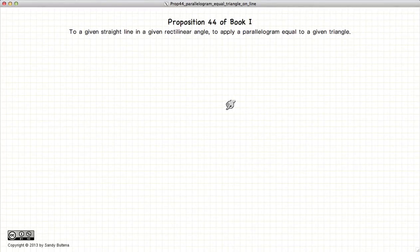which gives us the instructions on how to draw a parallelogram with the following conditions. We have a triangle, we have an angle, and we have a given line segment.